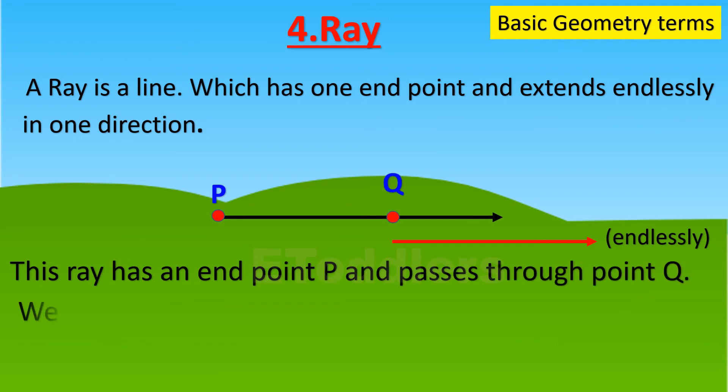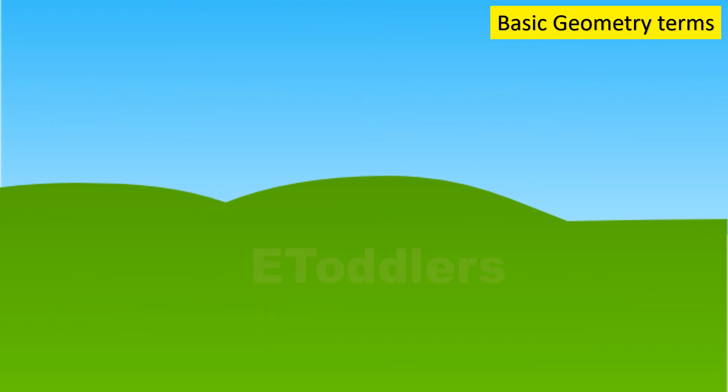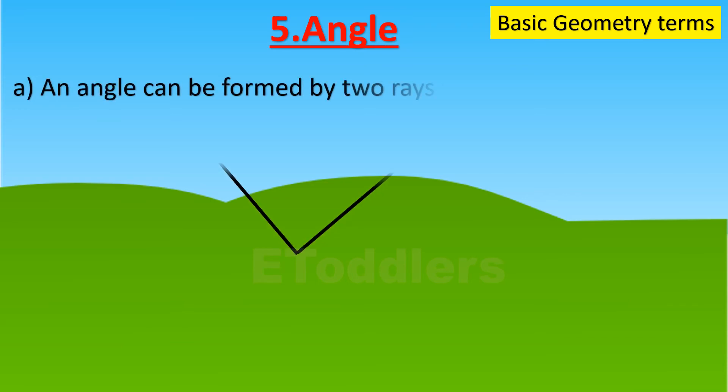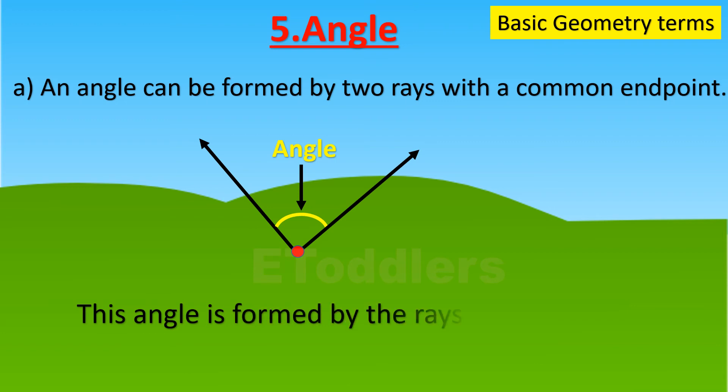The fifth term is angle. An angle can be formed by two rays with a common endpoint. This angle is formed by the rays OP and OQ. The common endpoint is O.